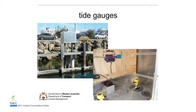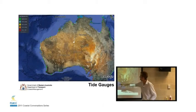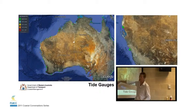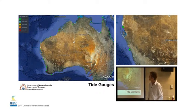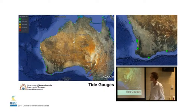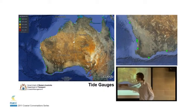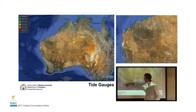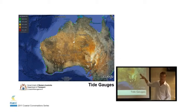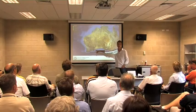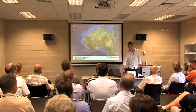This is a tide gauge — this is actually the one in Fremantle. It's a pretty simple piece of instrument; it's just a box with a tube that goes down into the water. This is one of the new ones which fires a beam down to tell the surface of the water. The old ones used to just have a float that went up and down in the tube. We've got quite a lot of these around the state — from Esperance, Albany, Bunbury, Fremantle, up to Geraldton. We're lucky because Fremantle actually goes back 100 years.